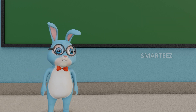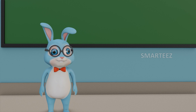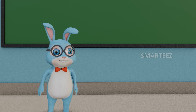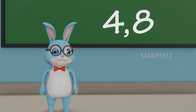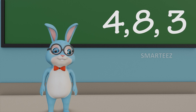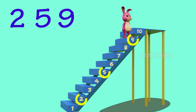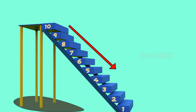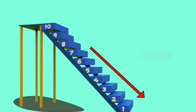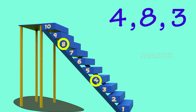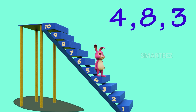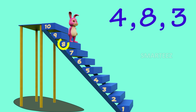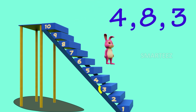Let's look at 3 different numbers and arrange them in descending order. Those are 4, 8 and 3. As we have known, descending order is going down in value. Are these numbers in descending order? Let's see our bunny hops.